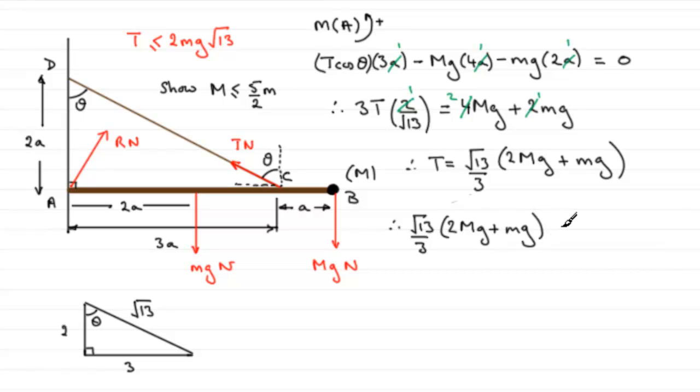That has got to be less than or equal to 2Mg√13. Now there's a √13 in each of these two terms, so we can cancel that out.